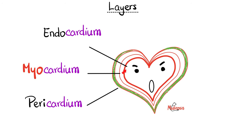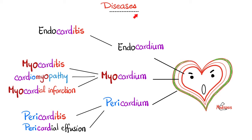Back to basics — here's the wall of the heart. The inner layer is the endocardium. The muscle layer, the middle layer, is the myocardium. And the outermost layer is the pericardium. Today's disease, acute pericarditis, affects the pericardium — hence pericarditis. Itis means inflammation. Diseases of the heart can involve the endocardium, which includes the valves, such as endocarditis.